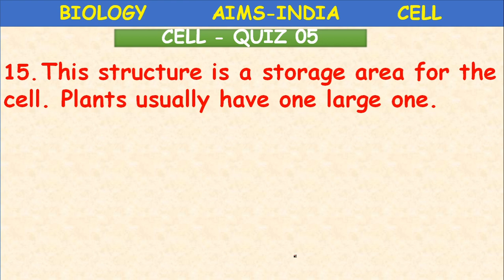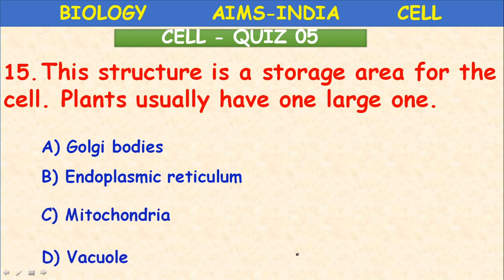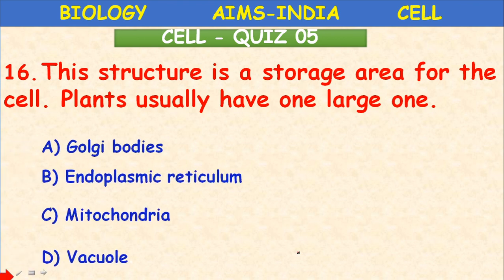This structure is a storage area for the cell — plants usually have one large one. Golgi bodies, endoplasmic reticulum, mitochondria, or vacuole? Obviously the answer is vacuole. The large one in plant cells means the vacuole — it is the storehouse of the plant cell.